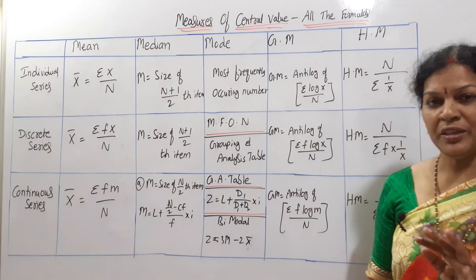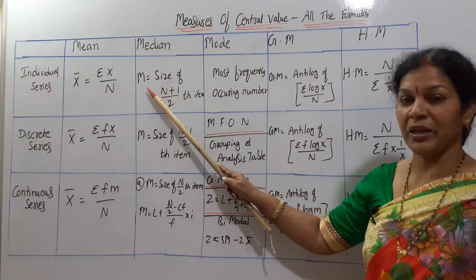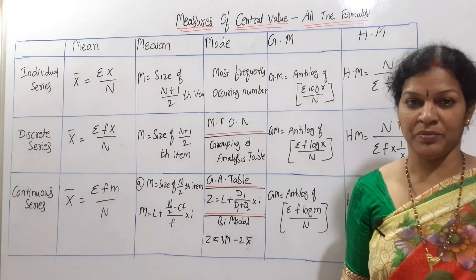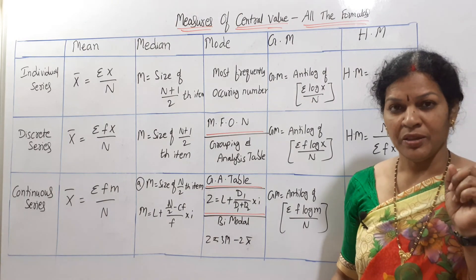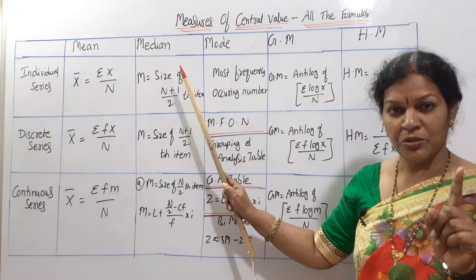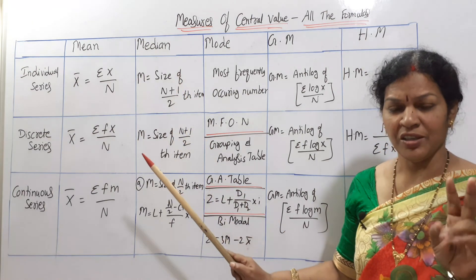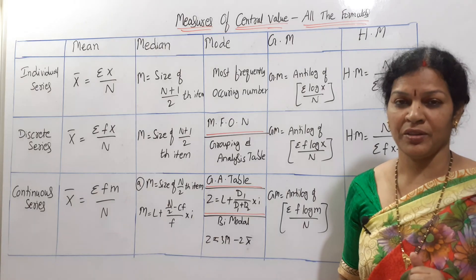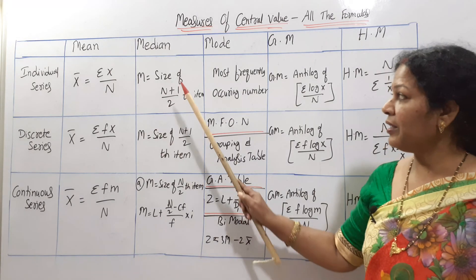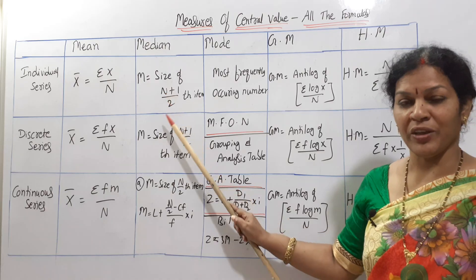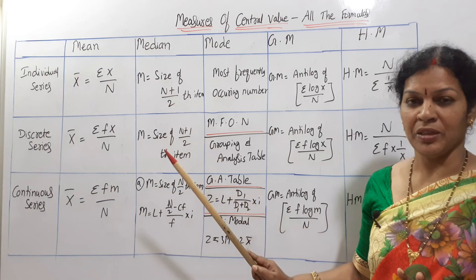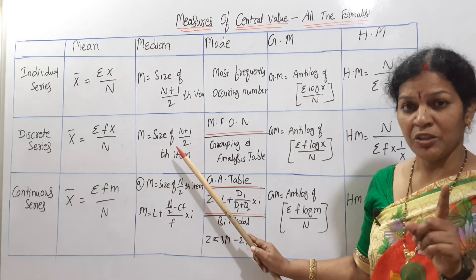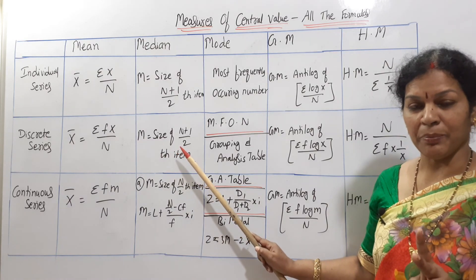Now let's see median. In individual series, the formula is M = size of (n+1)/2 th item. Always remember: whether individual or discrete series, the first thing you have to prepare is cumulative frequency (CF). Prepare CF first, then apply the formula: size of (n+1)/2 th item.